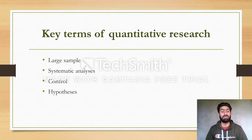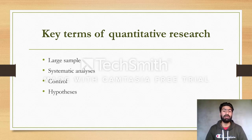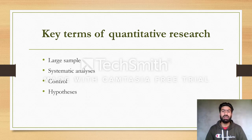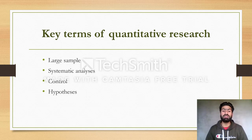Third, control — in quantitative research, the researcher has control over the data collected for analysis. Fourth, hypothesis — hypothesis is another important concept in quantitative research. While qualitative research uses research questions to understand concepts, quantitative research uses hypotheses that are statistically tested. There are many types of hypotheses based on the researcher's background knowledge.